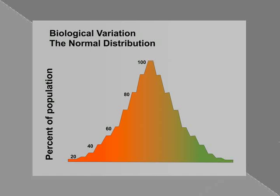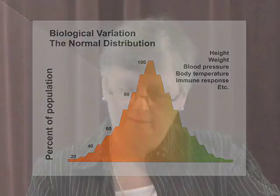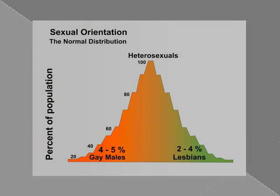You can see a normal distribution for almost any biological characteristic you wish to measure. We're not all alike — we vary. What I'm going to suggest to you today is that sexual orientation is one of those biological characteristics in which there is variance in the population, and that it falls under the same kind of normal distribution that every other biological characteristic falls under.